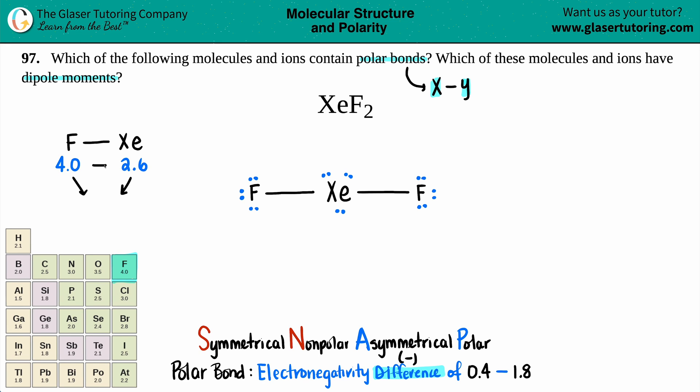So now I'm going to subtract my 4 from my 2.6. And it looks like I get a 1.4. That looks pretty good to me. I'm going to box that off. Do we fit into the realm? Yes, we do. It's pretty polar, mainly because you're dealing with fluorine. Fluorine loves to have all the electrons to itself. So this would for sure be a polar bond. We got polar bonds for XEF2.